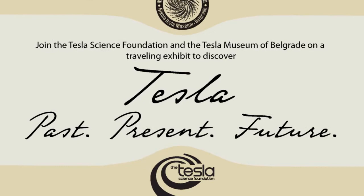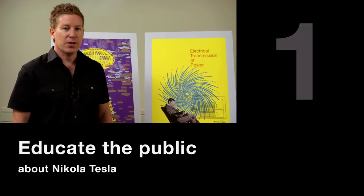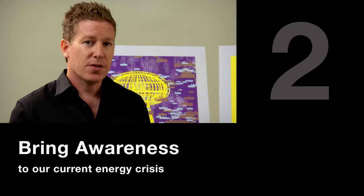This campaign addresses phase one of a three-phase project, and the project has three objectives: one, to educate the public about Nikola Tesla; two, bring awareness to our current energy crisis; and three, engage the audience utilizing the latest in mobile technology and interactive techniques.